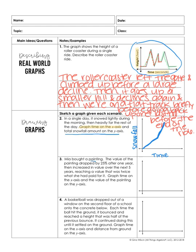So think: "dropped" — this is telling you your graph needs to be going down for a little bit. But then it said it increased over the next five years, reaching a value that was twice what she had paid for it. Graph time on the x-axis and the value of the painting on the y. So go ahead and try number three on your own.